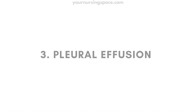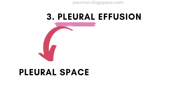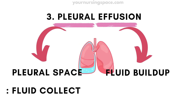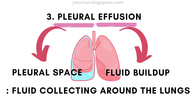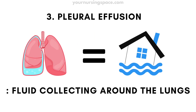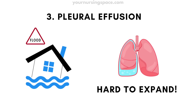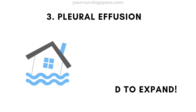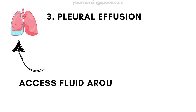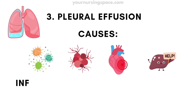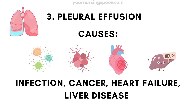Number three: pleural effusion. Pleural refers to the pleural space — the area around the lungs. Effusion means fluid buildup. So a pleural effusion is simply fluid collecting around the lungs, making it harder to breathe. Think of a flooded basement — just like too much water in a basement, excess fluid around the lungs prevents them from expanding properly. This can be caused by infection, cancer, heart failure, or liver disease.